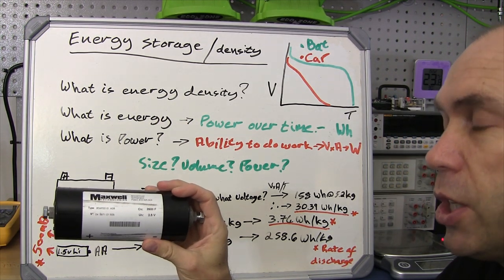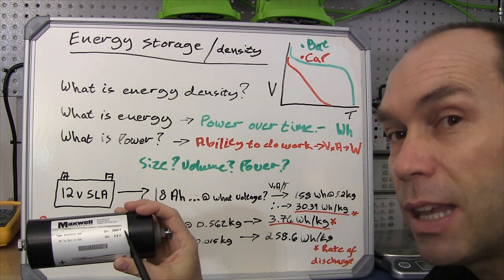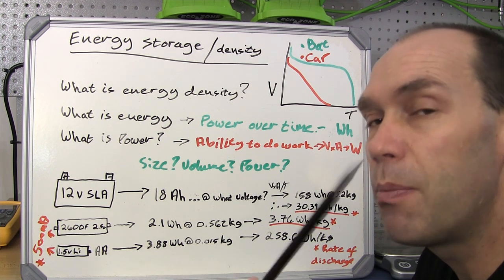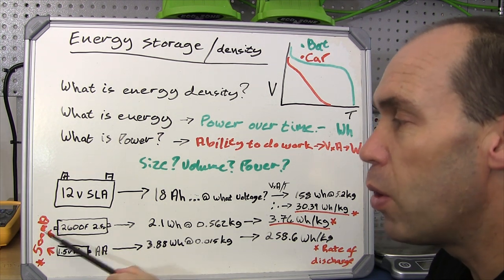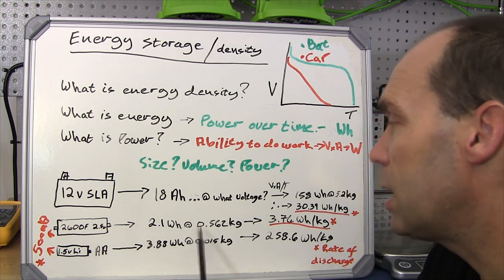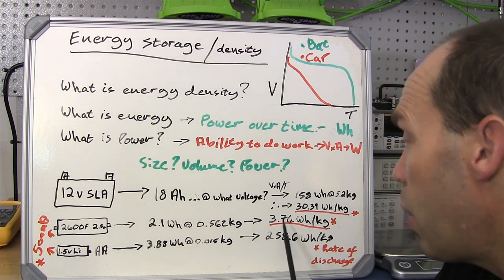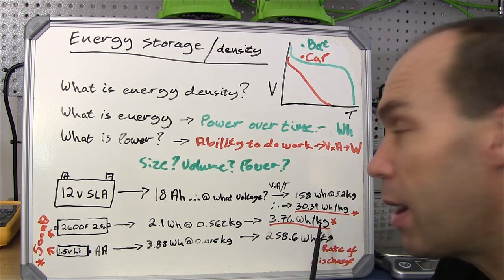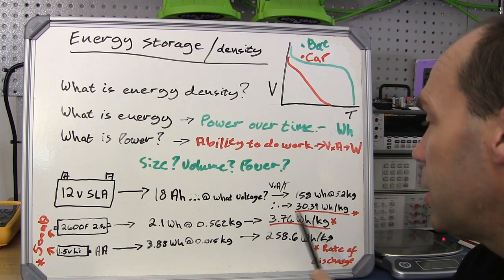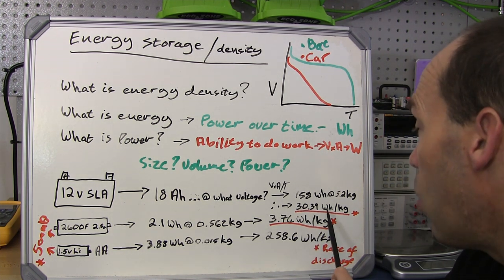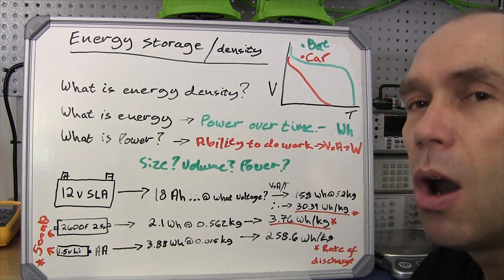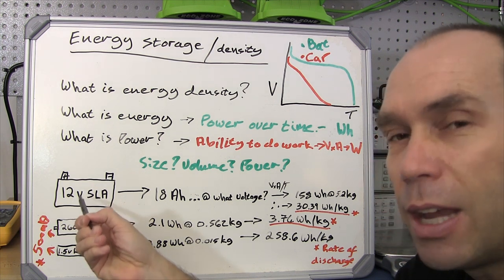The supercapacitor has a stated capacity of 2600 farads. In my testing at 500 milliamps — and this is where it's important: for direct comparisons you need your energy source discharged under similar temperature and load conditions — it delivered 2.1 watt hours and weighed just over half a kilogram, which equates to 3.74 watt hours per kilogram. You can immediately see there's quite a large disparity between 3.74 and 30 watt hours per kilogram, which is why lead acid batteries are so popular and supercapacitors currently aren't near the energy density of a lead acid battery.